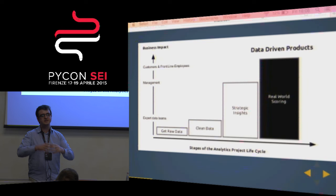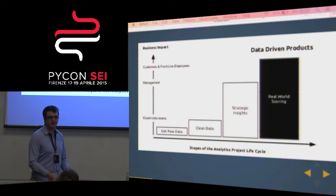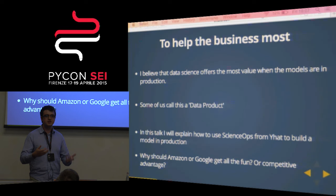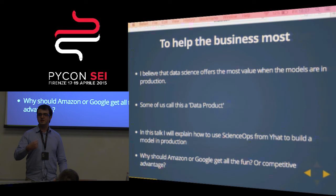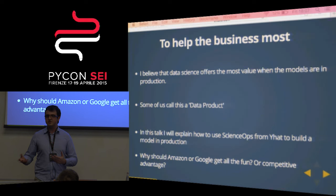You're broadening your audience. I used to be a teacher and I've always been passionate about how you broaden your audience — how you empower people at various levels of technical expertise to take advantage of these exciting trends. To help the business the most, models have to be in production. It's not quite the same as academia, where you produce the most value by getting citation counts. When models are in production and being used, that's a really powerful thing. That's what the real innovation is — some of us call it a data product.